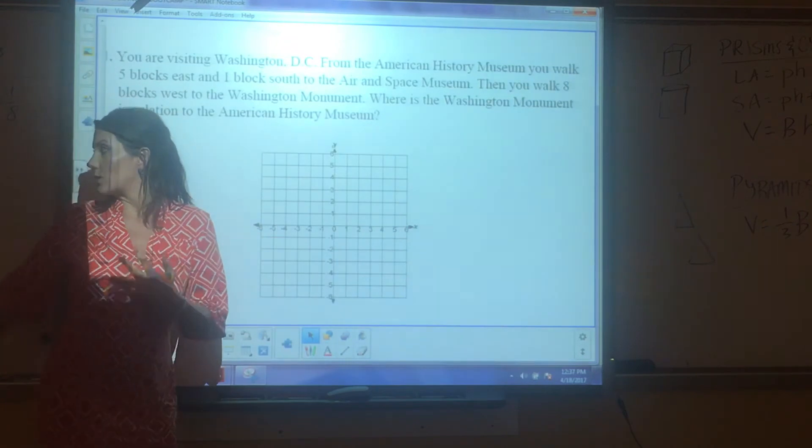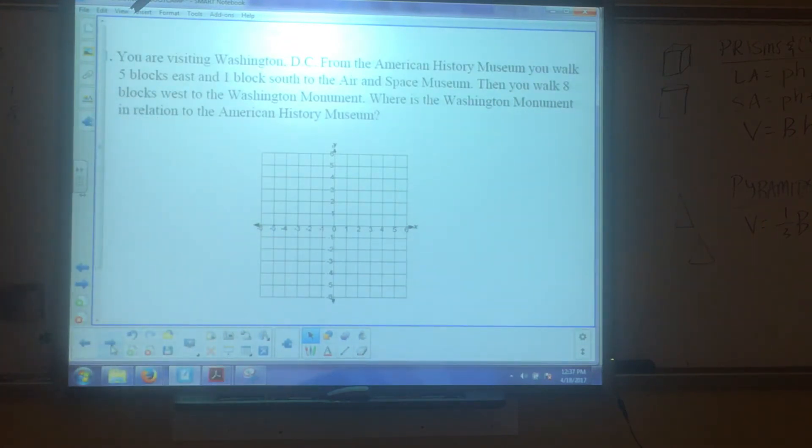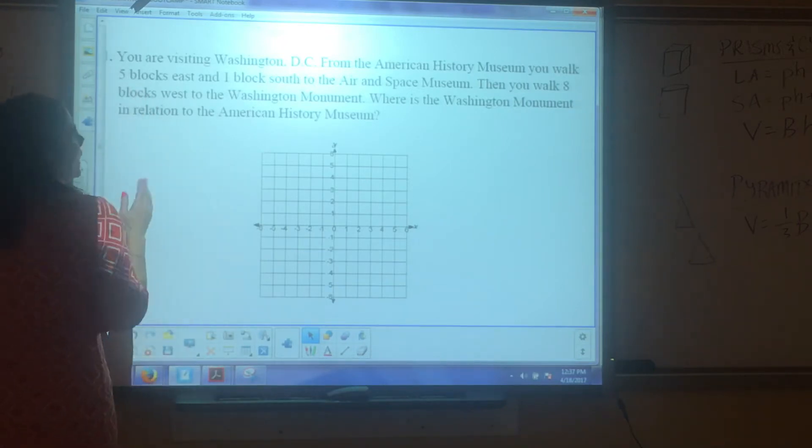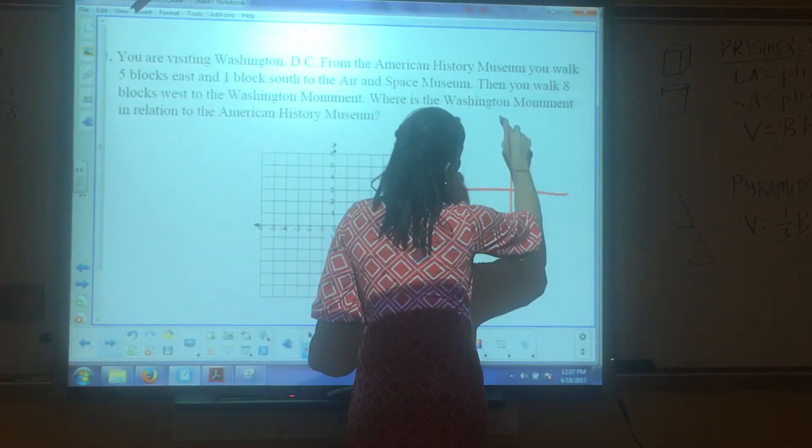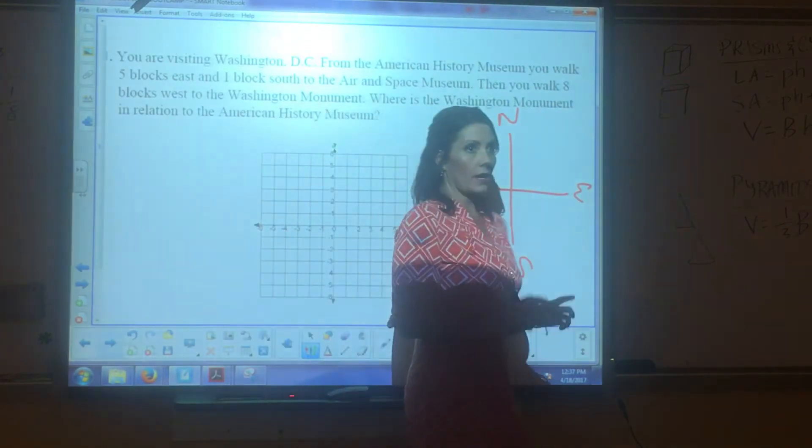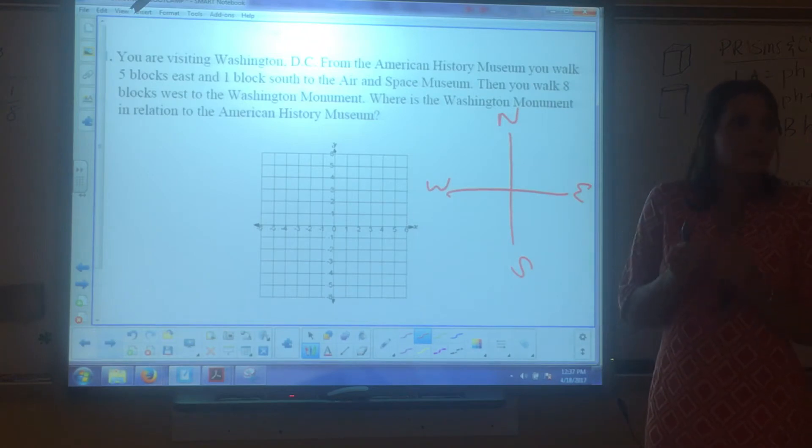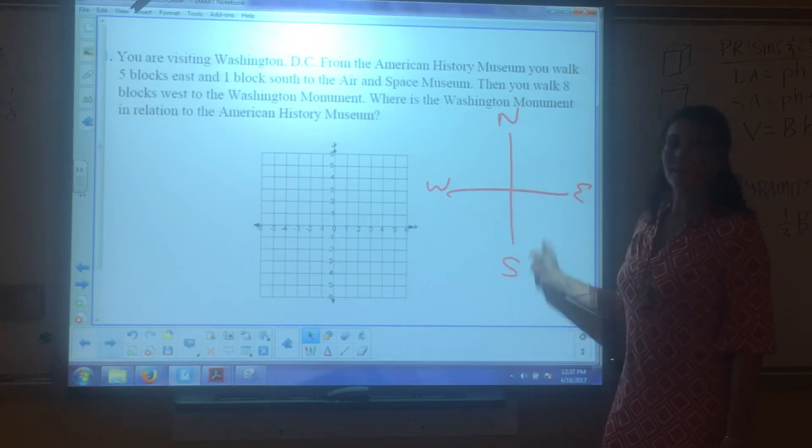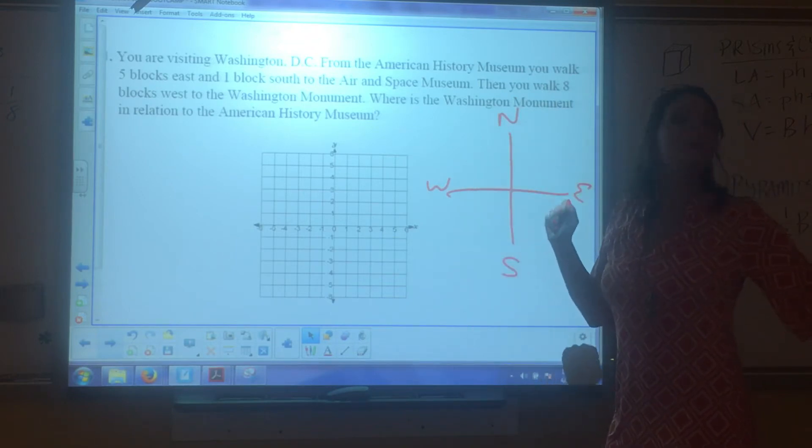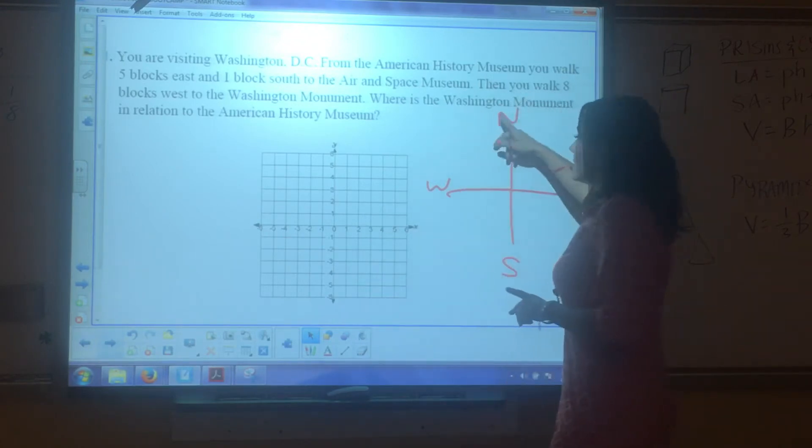So, if they say write the algebraic rule for this, you're going to always start like that. Maps onto, you're going to do X plus four. And then what? Y minus three. Y minus three. And we're done. All right? Do you want us to write that? No, this is for you. So, whatever you guys need to write, write. Okay? Good question. All right. Now, let's check this one out. You are visiting Washington, D.C. From the American History Museum, you walk five blocks east and one block south. Stop there. Okay? We need to know directions.